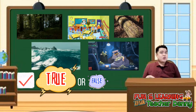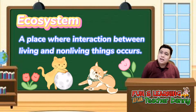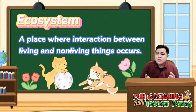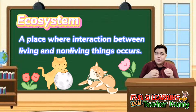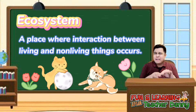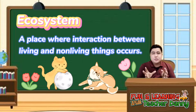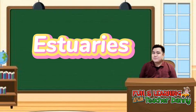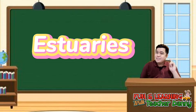All of your answers are true, which means you are correct, because all of the places mentioned are ecosystems — places where interaction between living and non-living things occurs. These plants or animals either live in a non-living thing, use it for food, or share a mutual relationship related to survival. For this lesson, we will study more about the interaction for survival among living and non-living things in estuaries. Come and join me as we explore science!